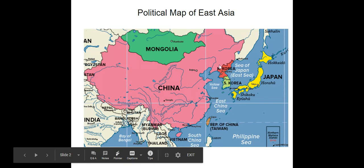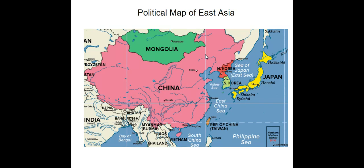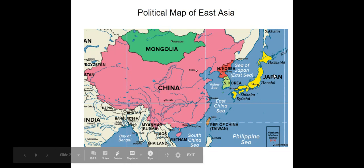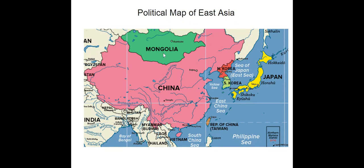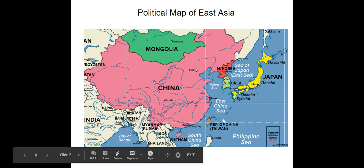The first set of maps are for East Asia. This map right here is the political map of East Asia, which shows us the countries included in the region. So we have Mongolia, China, North and South Korea, Japan, and Taiwan.